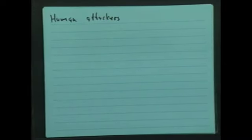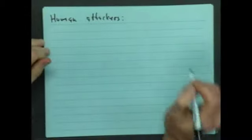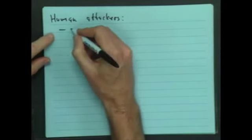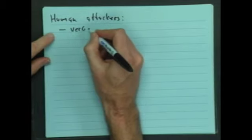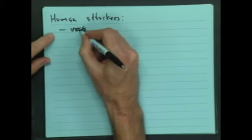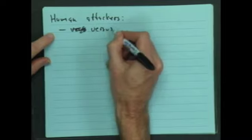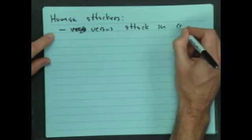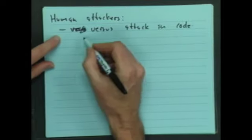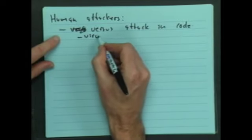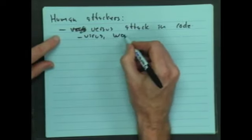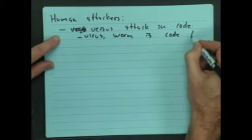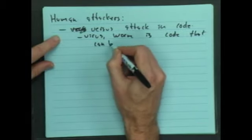Let's think about the difference between a human attacker versus an attack in code. Remember, a virus or a worm is code, and if it's code, it can be detected.